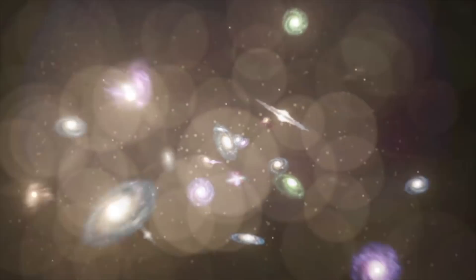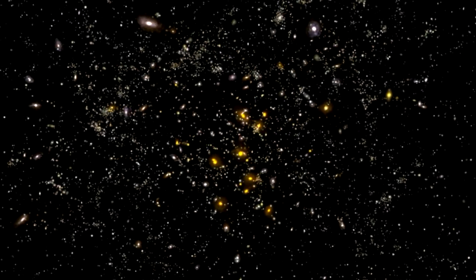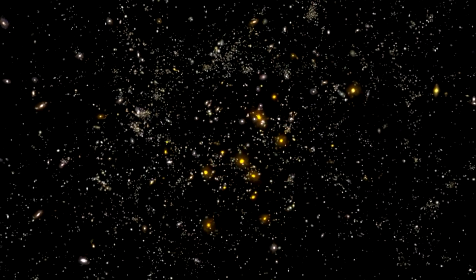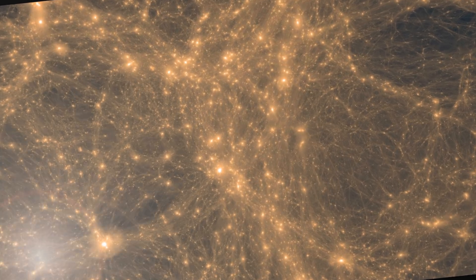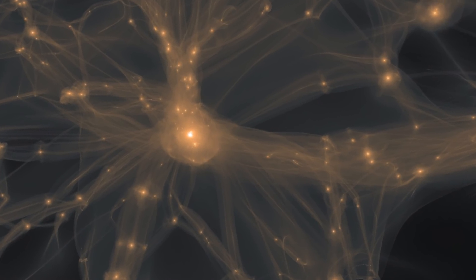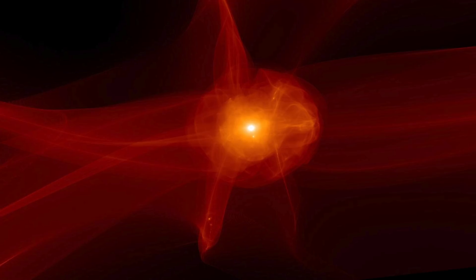The same is true of galaxies in clusters, which lead scientists to believe that something we cannot see is at work. They think something we have yet to detect directly is giving these galaxies extra mass, generating the extra gravity they need to stay intact. This strange and unknown matter was called dark matter since it is not visible.